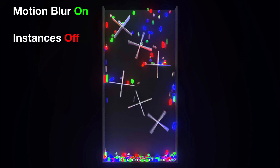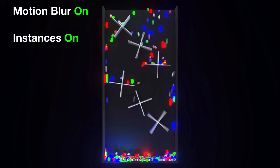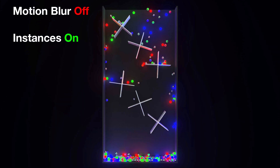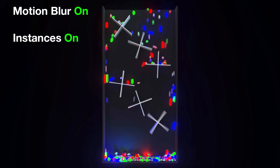So basically, motion blur and instances each work when you use them individually. However, when you use them together, for some reason it doesn't work. I don't know if this is a known bug, but I thought it was quite interesting and I'd make a little post about it. So if you want motion blur and instances in a scene, you can't have both — you can have one or the other. For me in this scene, I had to not use instances because I wanted the motion blur. The instances weren't having a huge effect since there weren't actually that many balls, but obviously in a scene with thousands of balls, this could be an issue.